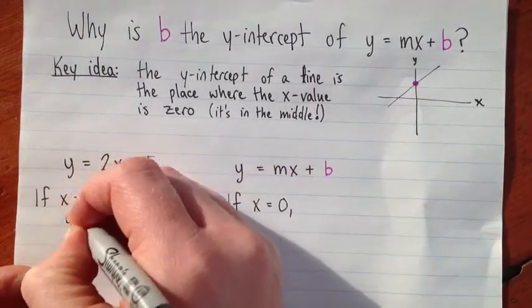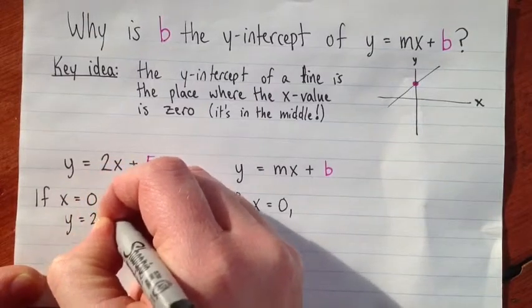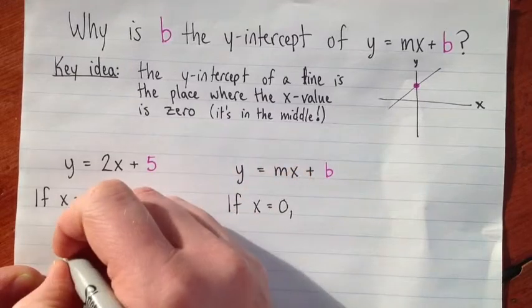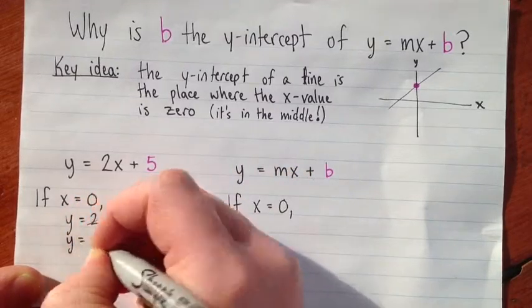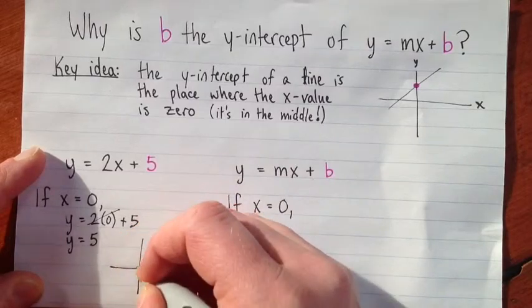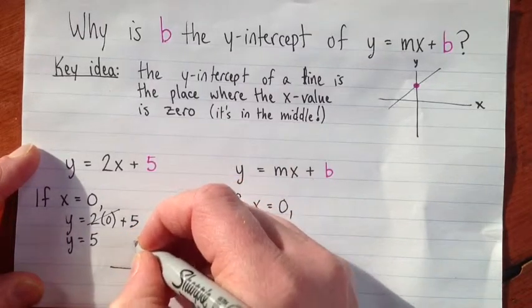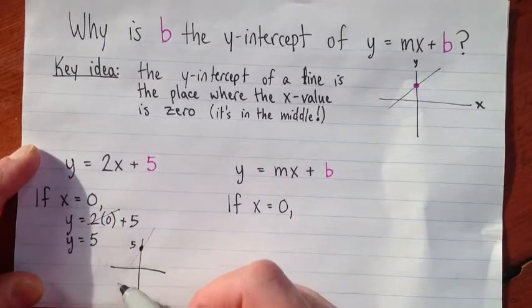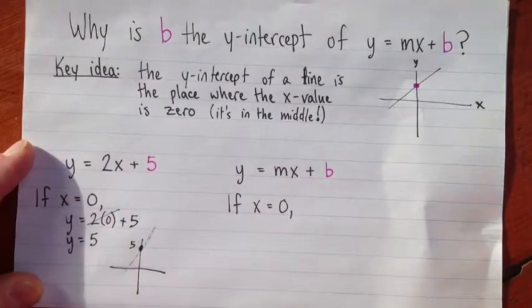And we get y equals 2 times zero plus 5. But 2 times zero is zero, so we have y equals 5. So that would give us a point on the line at 0, 5. That line goes like this.